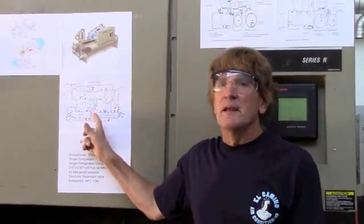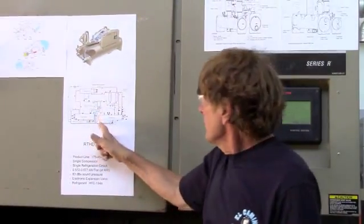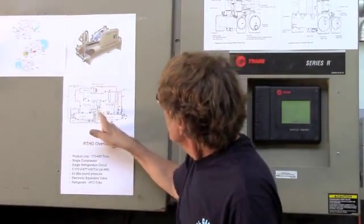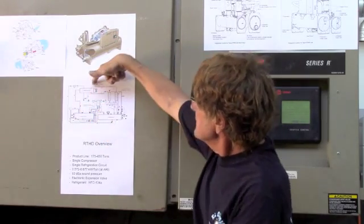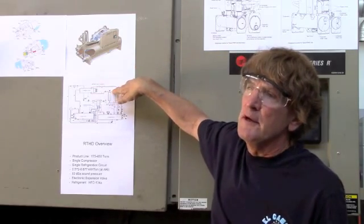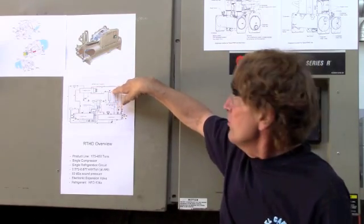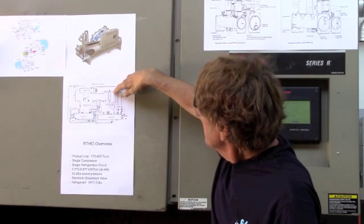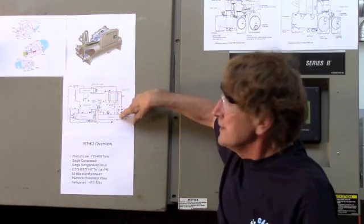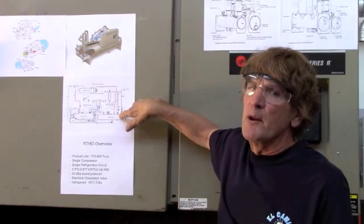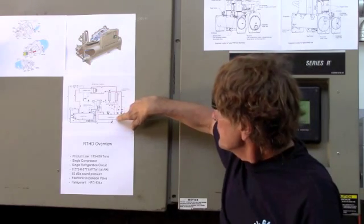In this particular case, it's a rotary chiller. We have the compressor section. Discharge gases, depending on what size, are going to go through an oil recovery process or oil separator. Out of the oil separator, it's going to go into the condenser, where we're going to run water through the condenser, cool off that refrigerant.